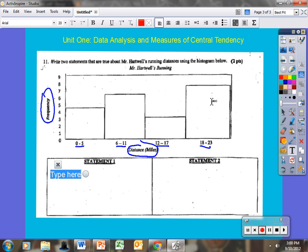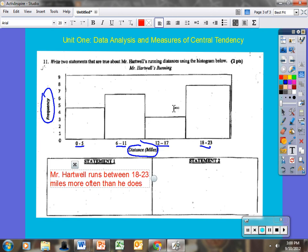One statement. I notice he runs between eighteen and twenty-three miles more often than he does twelve and seventeen. And so I can just write that out. Mr. Hartwell runs between eighteen and twenty-three miles more often than he does twelve to seventeen miles. That's it. This is not an inference. It's not inferring what kind of shape Mr. Hartwell is in. It's purely an observation based on what the data gives me.